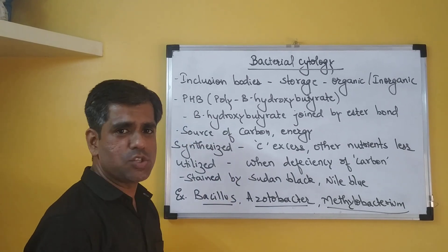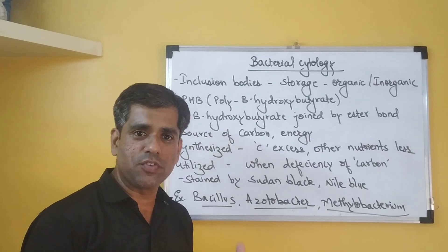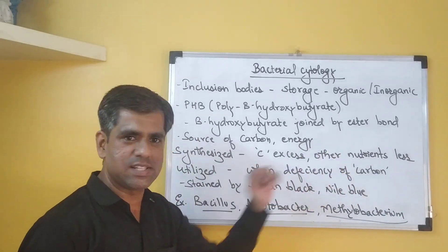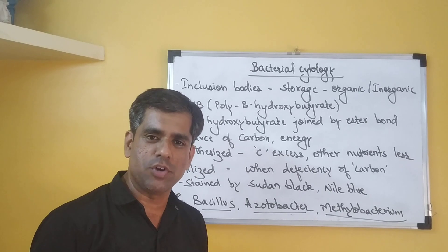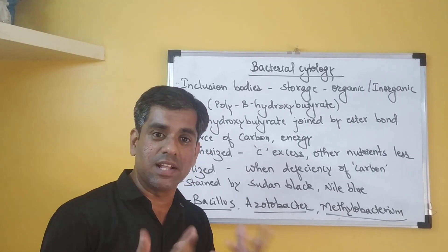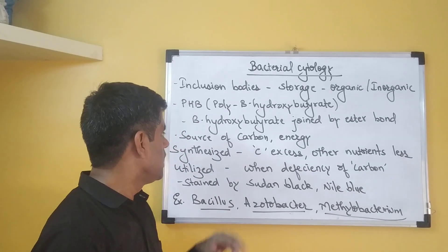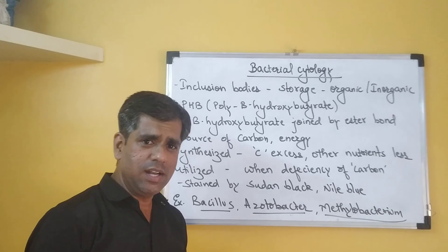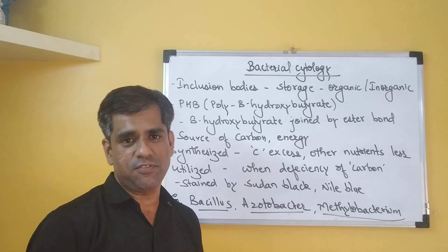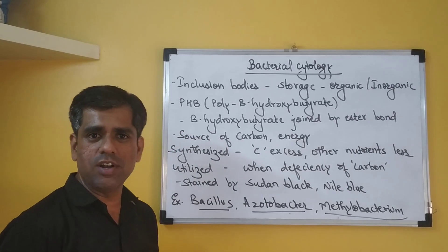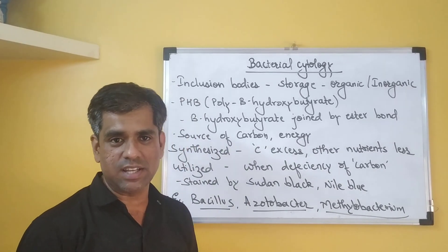Basically, PHB is a source of carbon and energy. Whenever a cell is in a situation where there is excess carbon but deficiency of other nutrients — such as nitrogen, phosphorus, or any other nutrient — the cell stores the excess carbon in the form of PHB granules. When the cell encounters a situation where other nutrients are in excess but carbon is deficient, PHB hydrolysis provides the required energy, carbon, and material for various biosynthetic reactions.